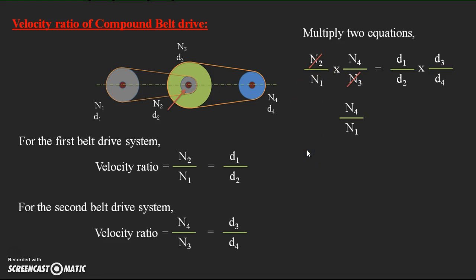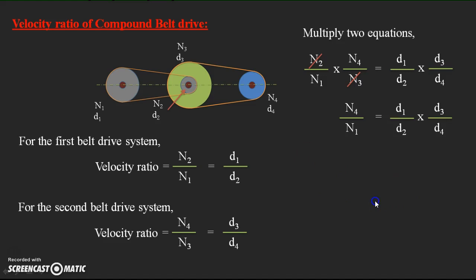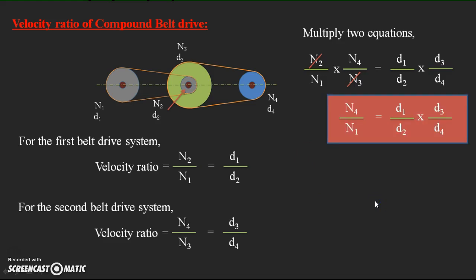Finally, we write the equation as N4 by N1 equal to (D1 by D2) multiplied by (D3 by D4), or equivalently (D1·D3) divided by (D2·D4). This is the equation for the velocity ratio of the compound belt drive.